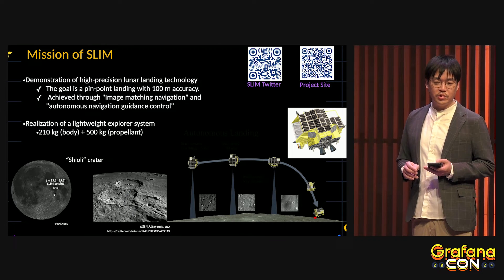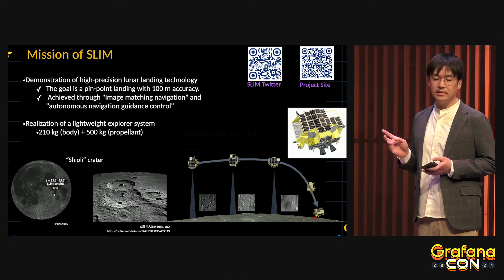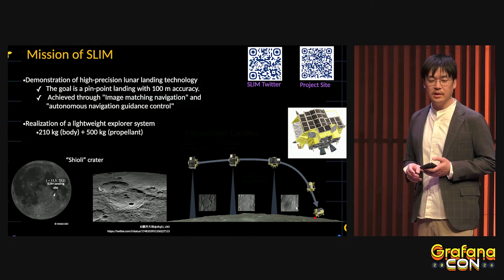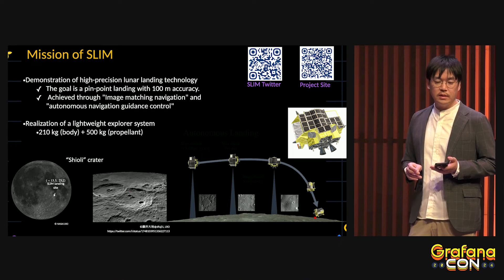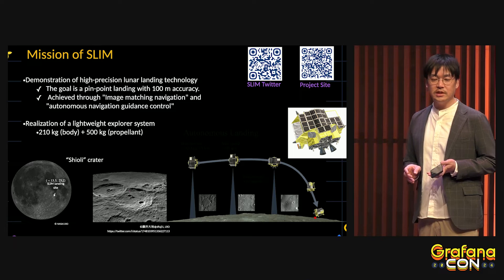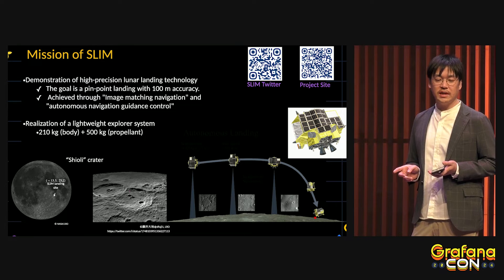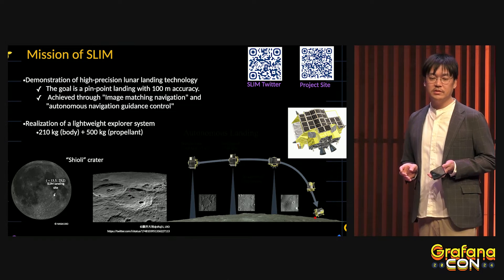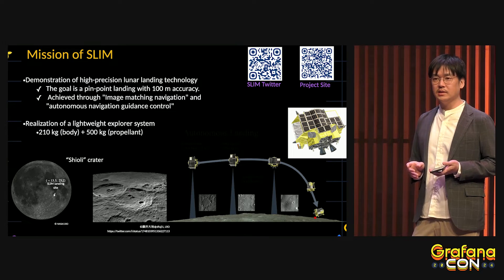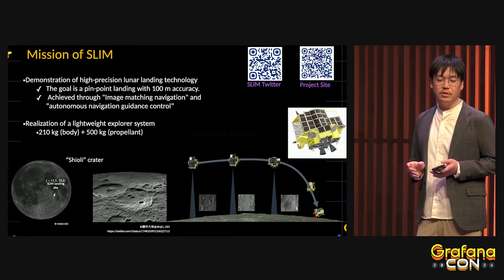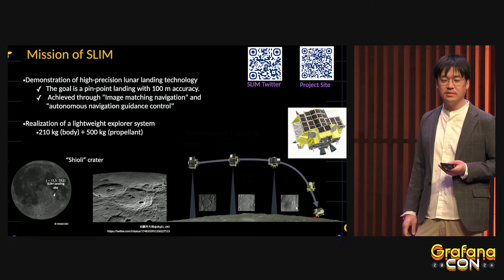This matching process is repeated, leading SLIM to the landing point, which is a crater named Shioli. Another feature of SLIM is its light weight — the body is only 200 kilograms, plus 500 kilograms of propellant.